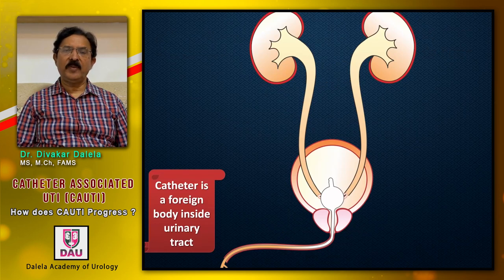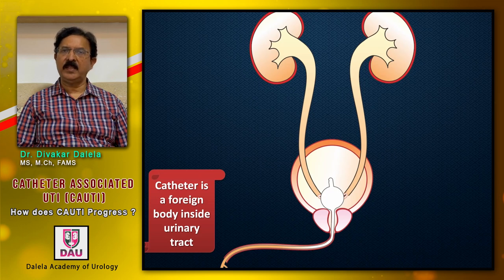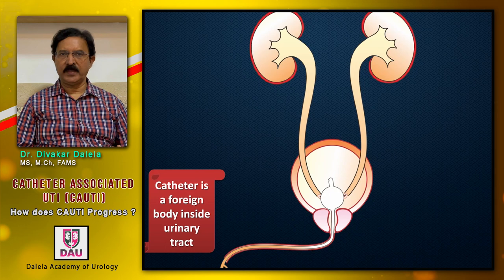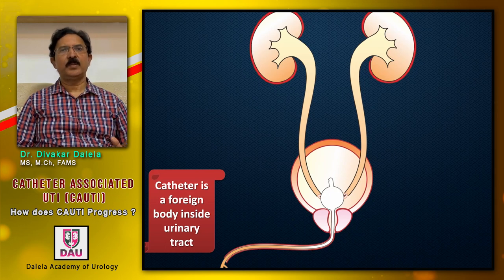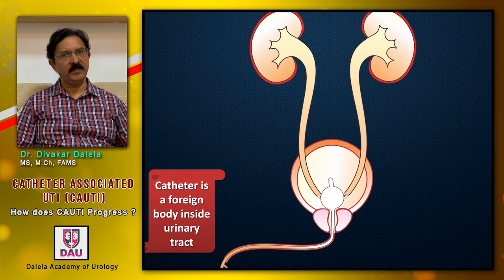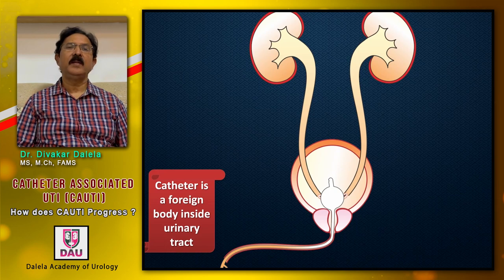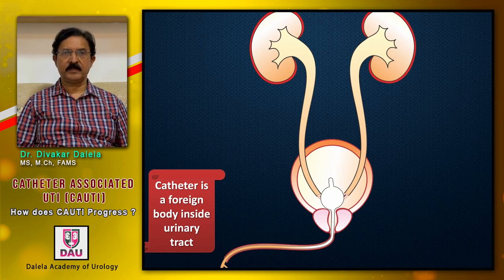You should know the fundamental. Once you place a urethral catheter in anyone's urinary tract, it is regarded as a foreign body. It is not natural. The human body will react against it, which is quite understandable. It can react in various ways, and one way is CAUTI.